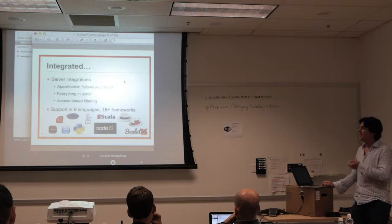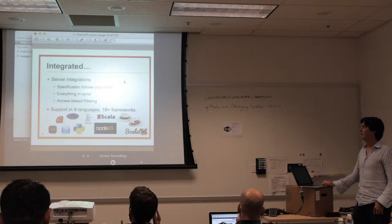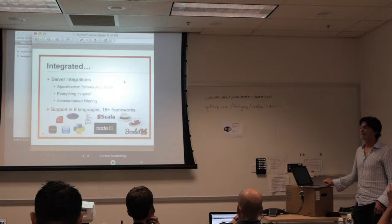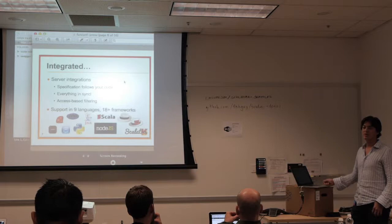In the process of creating the framework for Swagger, our goal was making a server integration where the JSON specification actually follows the code — everything is in sync. If it's integrated, you can take advantage of access-based filtering, which means if there are APIs that only your admins should see with their API keys or authentication, they'll be documented only for those with permission.